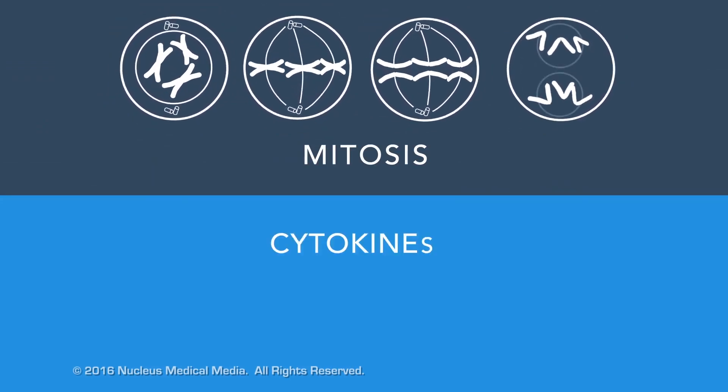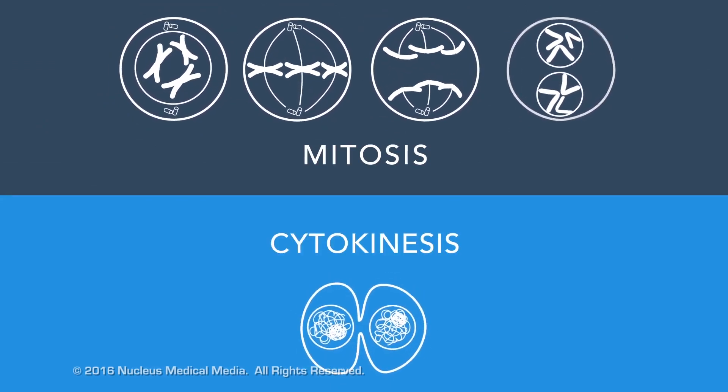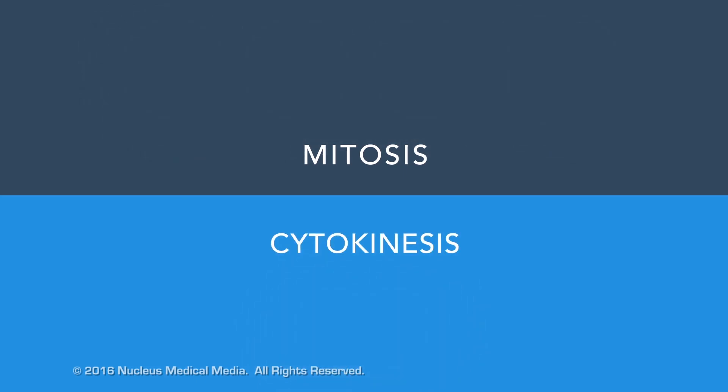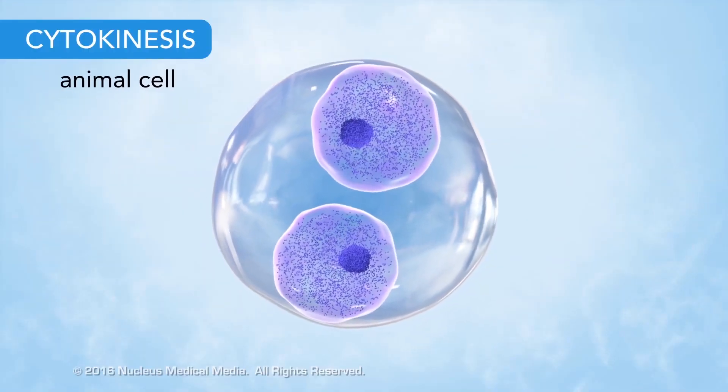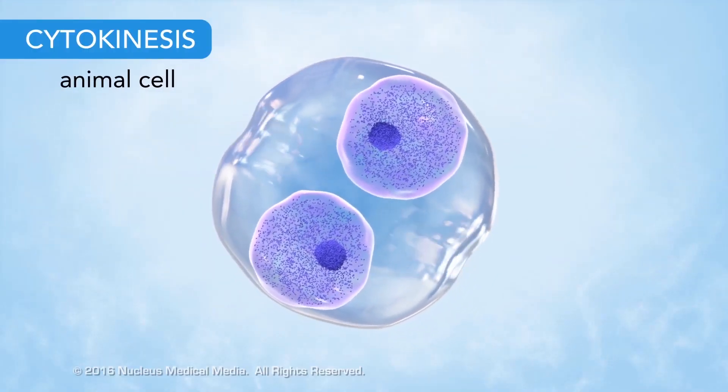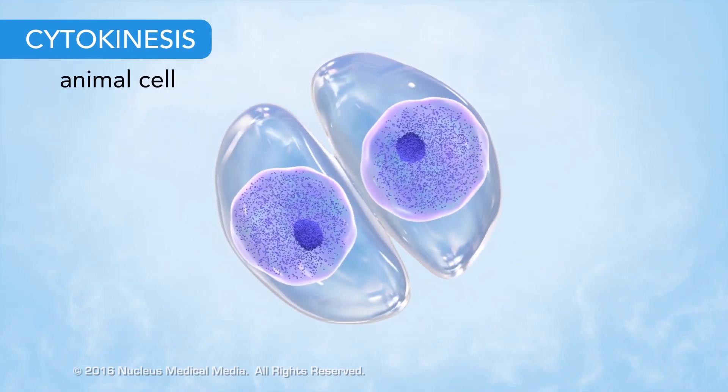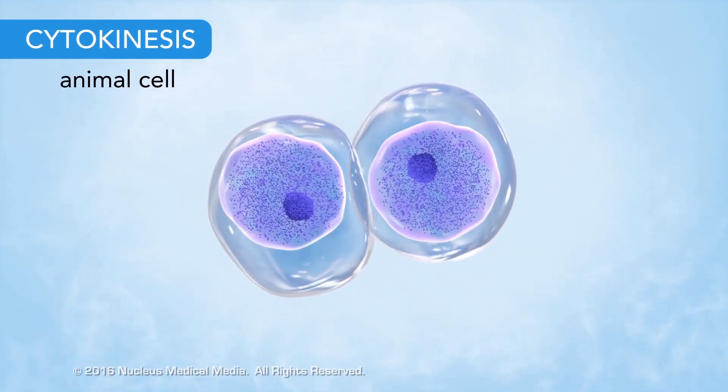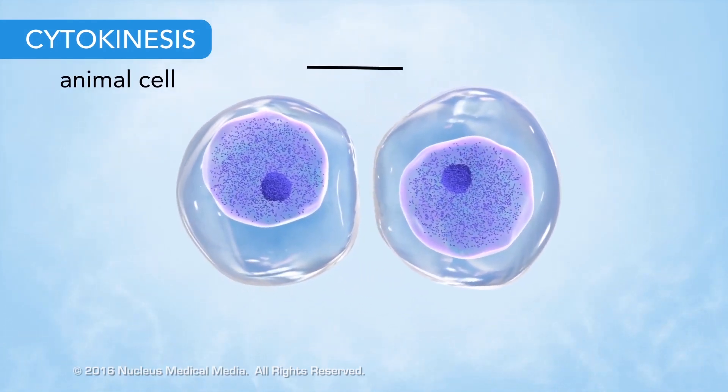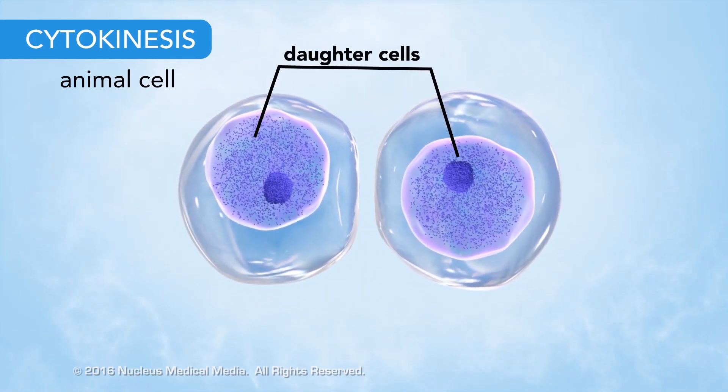The final step of the M phase is cytokinesis, the division of the cytoplasm. In animal cells, cytokinesis occurs through the inward movement of the cell membrane. This progressively pinches the cytoplasm until two identical daughter cells form.